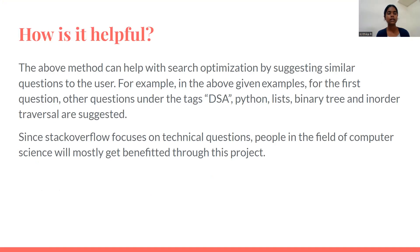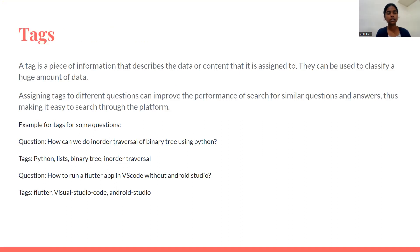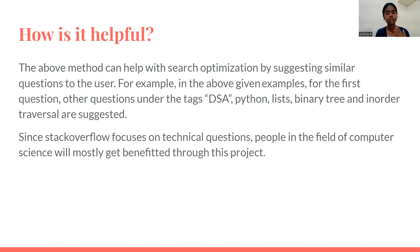So how is this helpful? Like I mentioned before, it will be helpful with search optimization. Basically, let us consider the question from the example: how can we do in-order traversal for a binary tree using Python? It has tags like Python, lists, binary tree, and in-order traversal. If we search for this, all the other questions that come under these tags can also be suggested to the user, so that they'll be able to find answers easily. Since Stack Overflow mainly focuses on technical questions, people in the field of computer science, like programmers and everyone, will be the ones that mostly benefit from this project.